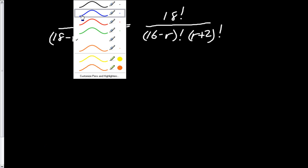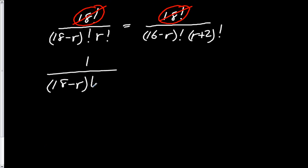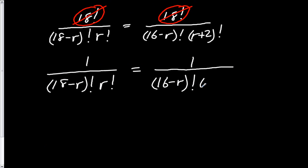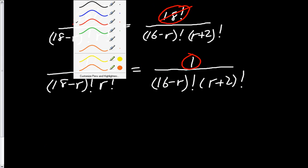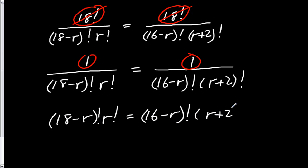The first thing I want to point out here — I'll give this a little circle — since this is common to both sides, I'm going to divide it out. We can simplify both sides to essentially being 1 over (18 minus R) factorial multiplied by R factorial, equaling 1 over (16 minus R) factorial times (R plus 2) factorial. Since 1 equals 1, the denominators have to be equal, so we can rewrite it as (18 minus R) factorial times R factorial equals (16 minus R) factorial times (R plus 2) factorial.